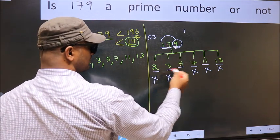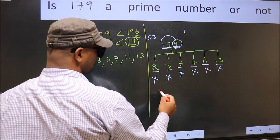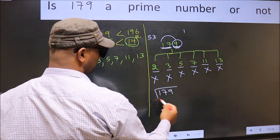So, 179 is not divisible by any of these numbers. Hence, 179 is a prime number.